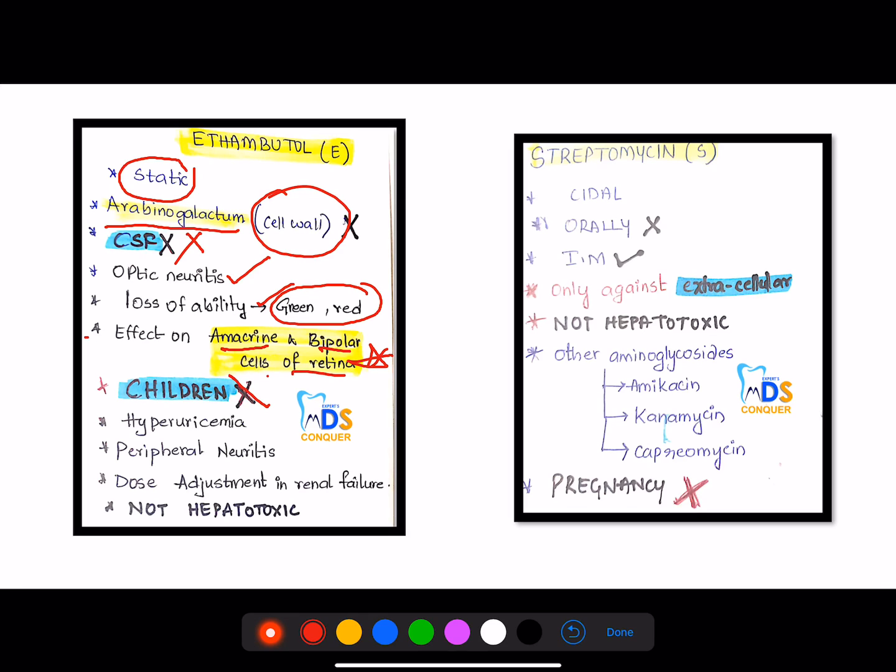And this cannot be used in children, that is contraindicated in children. It can cause hyperuricemia, peripheral neuritis, and it needs a dose adjustment in renal failure. And it is not hepatotoxic, but it is renal toxic.